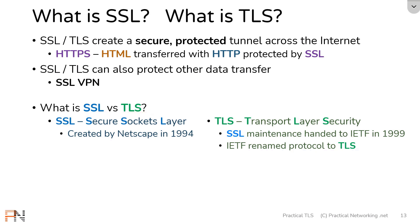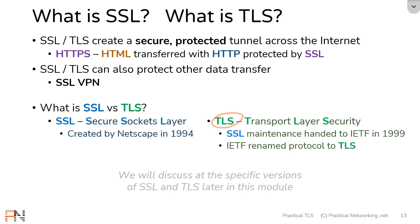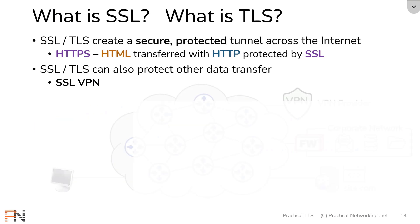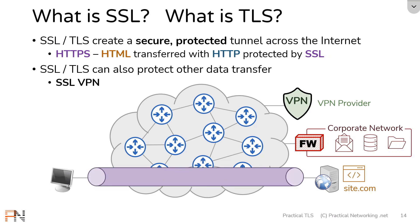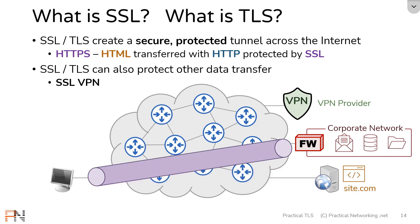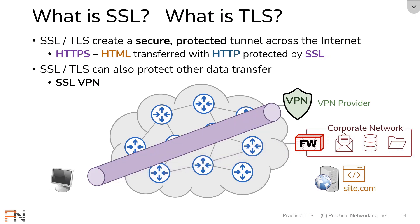There are actually a few different versions of SSL and a few different versions of TLS, and we're going to be looking at each of those in a later lesson in this module. The main takeaways for this lesson are having a clear definition of SSL and TLS — that they create a secure, protected tunnel across the internet — and understanding the three main use cases: using HTTPS to securely transfer websites, using an SSL VPN to connect to a corporate network, or connecting to a public VPN provider to hide your identity.